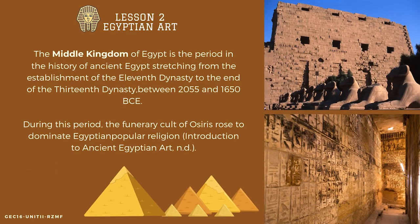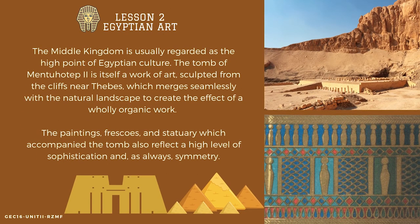The Middle Kingdom of Egypt stretches from the establishment of the 11th dynasty to the end of the 13th dynasty, between 2055 and 1650 B.C.E. During this period, the funerary cult of Osiris rose to dominate Egyptian popular religion. The Middle Kingdom is usually regarded as the high point of Egyptian culture. The tomb of Mentuhotep II is itself a work of art, sculpted from the cliffs near Thebes, merging seamlessly with the natural landscape.